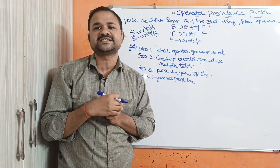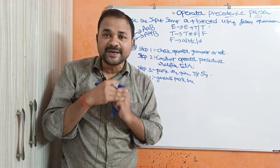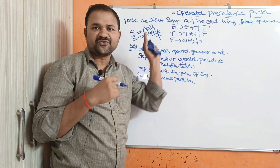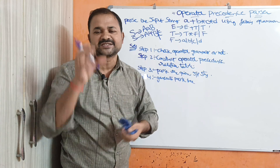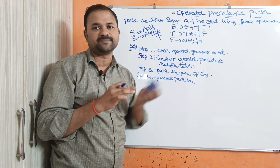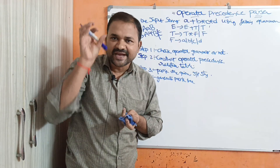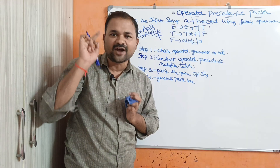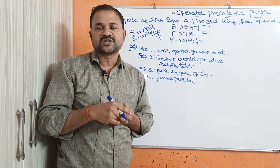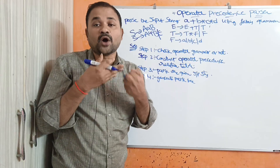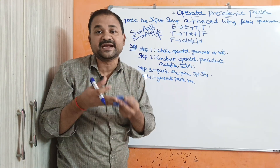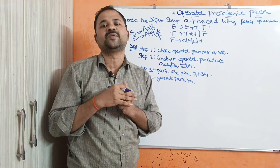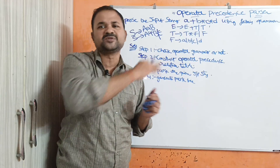The second constraint is epsilon cannot be allowed. If we have a production with epsilon on the right side, that is not permitted. Operator grammar requires satisfying both constraints: no adjacent variables and no epsilon on the right side of any production.